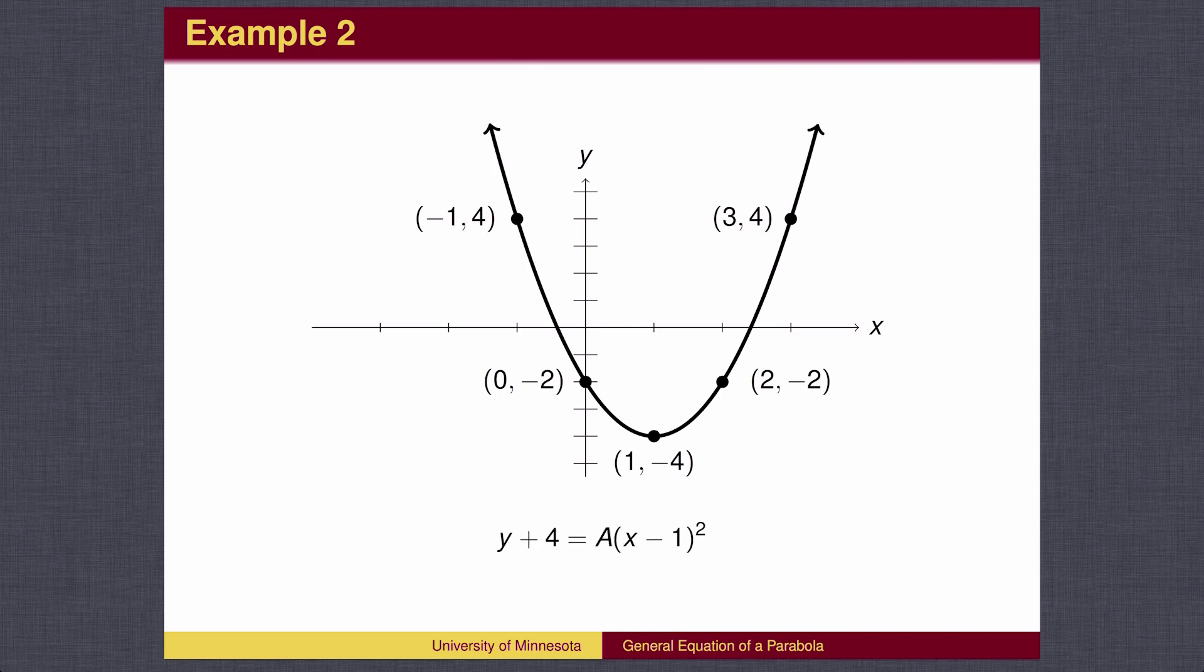The parabola opens upward, so a is positive. When we move left or right 1, we expect to go up 1, but in this case we went up 2, so the stretch factor is 2. The equation is y plus 4 equals 2 times (x minus 1) squared.